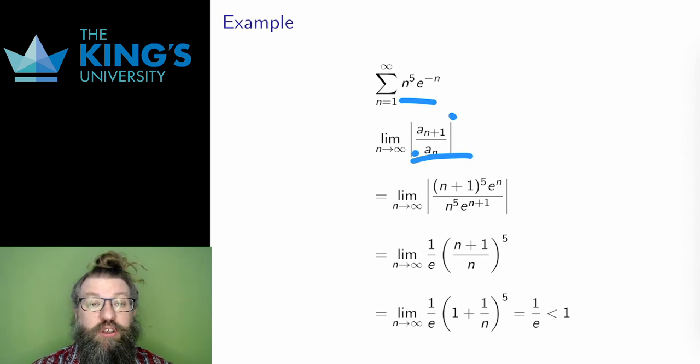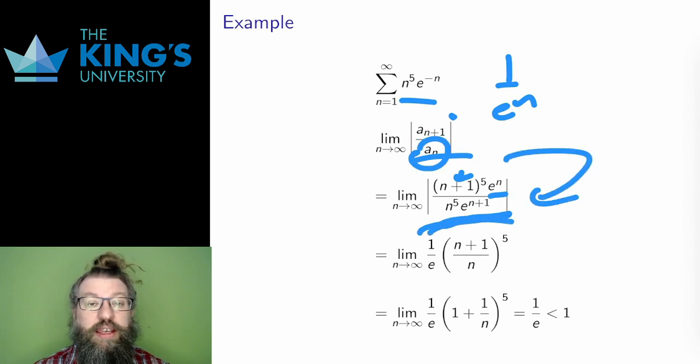I look at the limit of the ratio of the terms. So the n+1 term has n+1 in the place of n. I write the negative exponent in the denominator. So the n+1st term is (n+1)^5 over e^(n+1). Then the nth term is n^5 over e^n. And once I simplify the nested fraction, this is the expression I get.